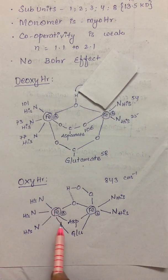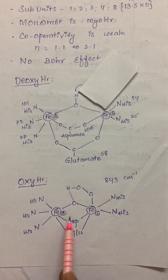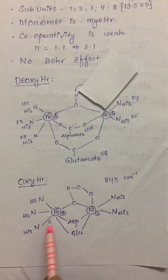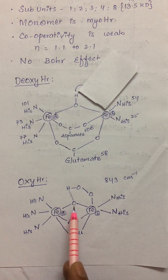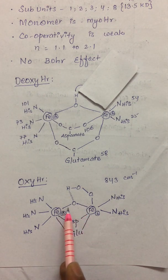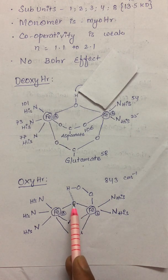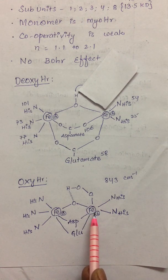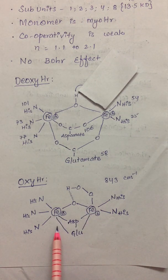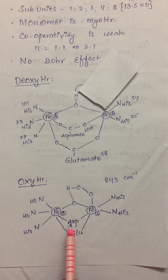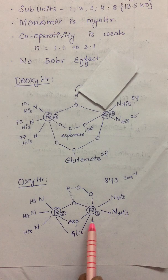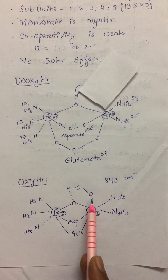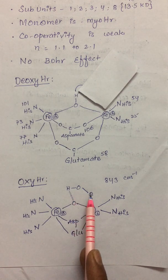In oxyhemerythrin, around iron A the geometry is approximately octahedral: three are nitrogen from histidines, the fourth is now an oxo bridge (not hydroxo) since the hydrogen has been taken by the dioxygen bound to iron B, and the fifth and sixth sites are oxygens from aspartate and glutamate. Iron B now has a coordination number of six, with the sixth coordination site occupied by a dioxygen that is converted into a peroxide upon binding.